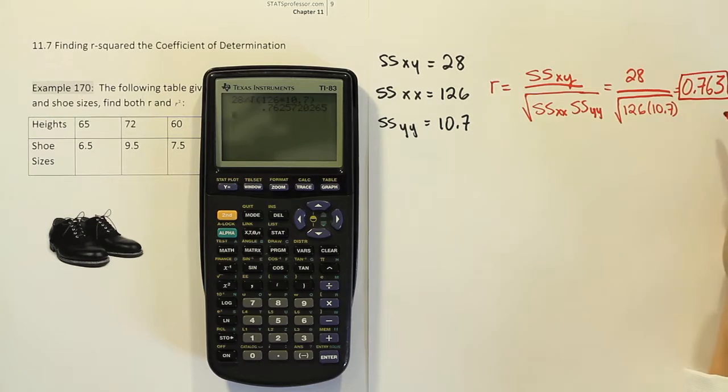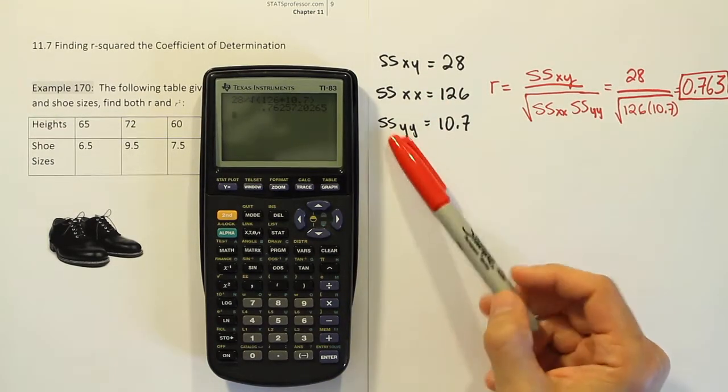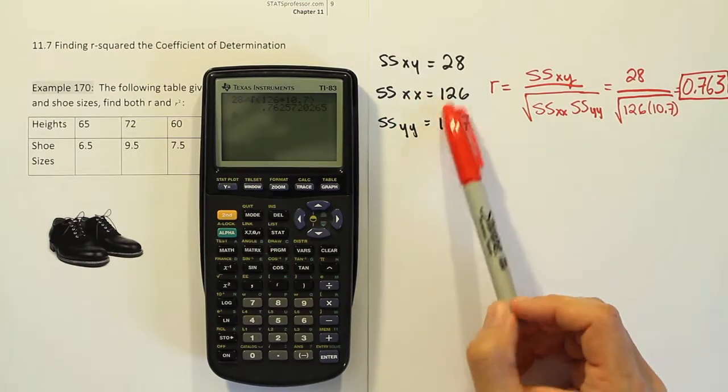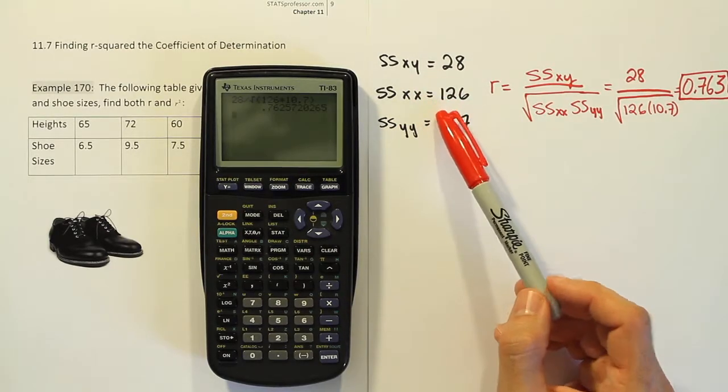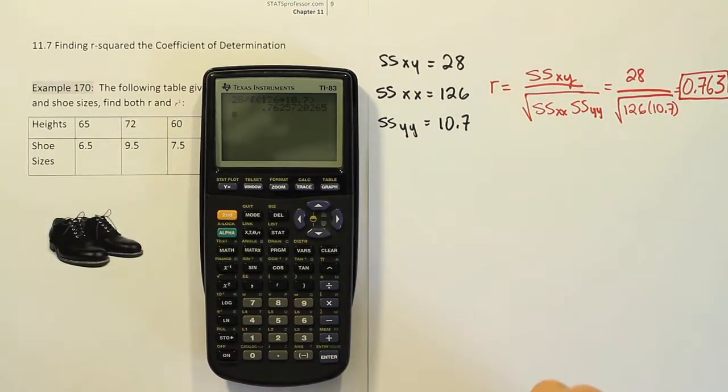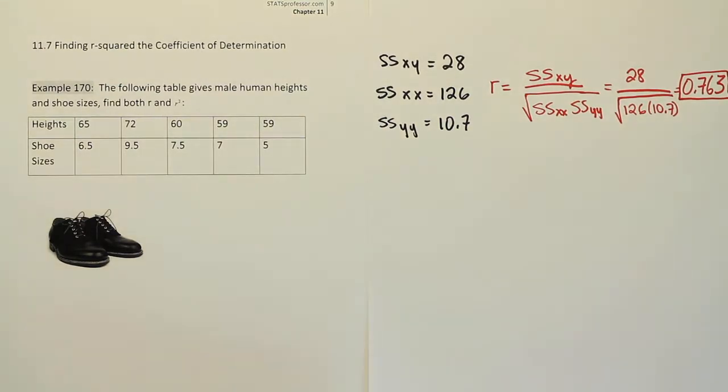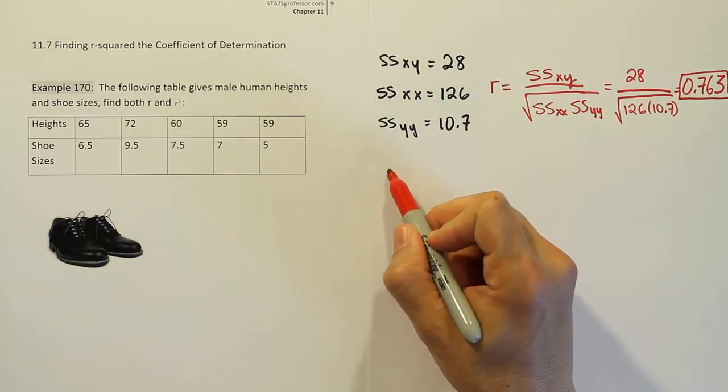We could simply just square that value. That is the easier way to do it. However, I don't want to do it that way because in some problems you may not be given the information that we're given here, or we may not be able to derive these quantities fully. A professor could leave out one or two to make it harder on you and make it so that you can't just square the r value. So what I want to do then is to show the actual formula for r squared if you don't use the simple idea of squaring r.